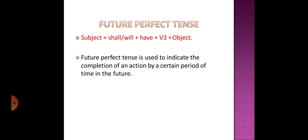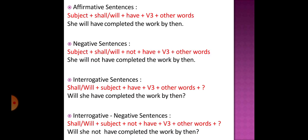Moving on to future perfect tense. The future perfect tense is used to indicate the completion of an action by a certain period of time in the future — it denotes an action that will be completed in the future. For example: 'You will have finished your project by next year' or 'I shall have reached Delhi by December.' The affirmative sentence structure is: subject plus shall/will plus have, plus verb in the third form, plus other words. For example: 'She will have completed the work by then.'